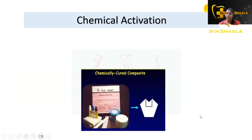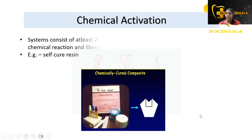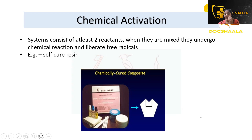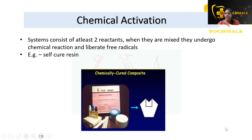Coming to the chemically cured resin: chemical activation is where the system contains two reactants. When they are mixed, they undergo a chemical reaction which liberates free radicals and then forms a polymer. An example is self-cure resin. These are the methods of activation or induction or initiation of the polymerization reaction.